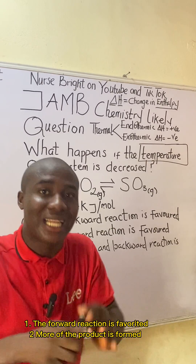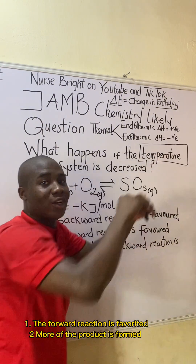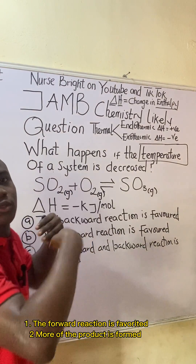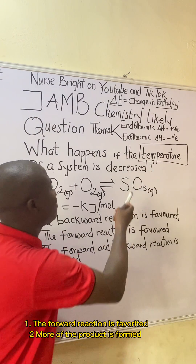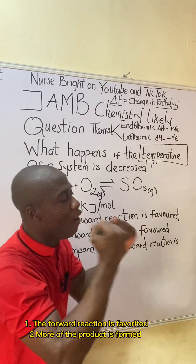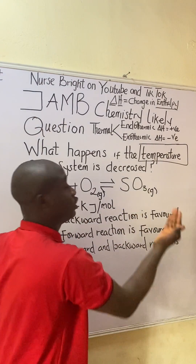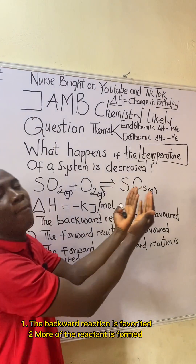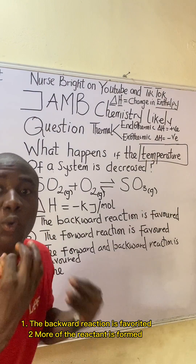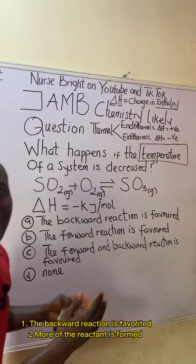If the equilibrium position shifts to the right, the forward reaction is favored and more SO₃ is formed. Conversely, if the equilibrium position shifts to the left, the backward reaction is favored and more of the reactants — SO₂ and O₂ — are formed. That is what it means when the equilibrium position of a reaction shifts to the left-hand side.